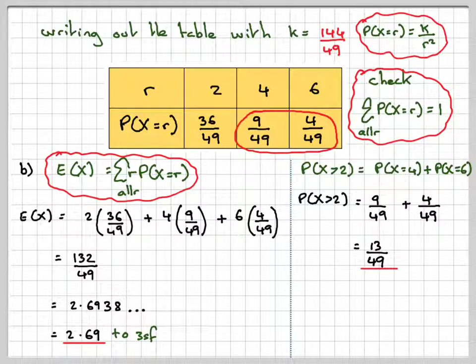So this has been a video to show you how to change the probability density function into a table and then use that to calculate a value of k and then use that to find the expected value and a probability. I hope you've understood, and I thank you very much for watching.